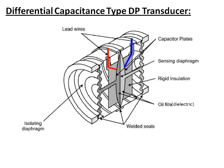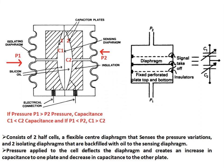To overcome the disadvantage of single-ended capacitors, a differential capacitor type DP transducer is used. In this DP transducer there are three plates: one moving plate — the sensing diaphragm — at the center, and two fixed plates on either side of the sensing diaphragm. P1 is the pressure applied to one side of the DP transmitter through an isolating diaphragm, and P2 is the pressure applied to the other side.